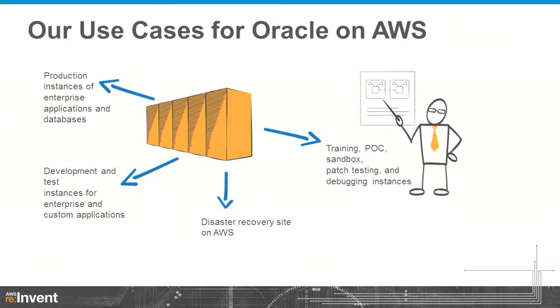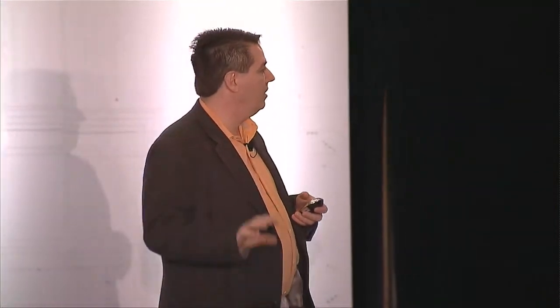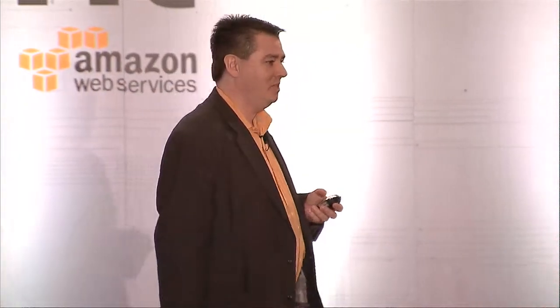Talking about use cases: the obvious one is production, dev, and test instances. We also do disaster recovery on AWS. And one exciting example is a large Oracle training company — we built a dashboard allowing them to start and schedule trainings, giving every student their own private PeopleSoft or Oracle application instance for eBusiness Suite, OBIEE, and other products. Last week they started 250 instances, doing about 100 terabytes a week of starting and stopping Oracle application instances.